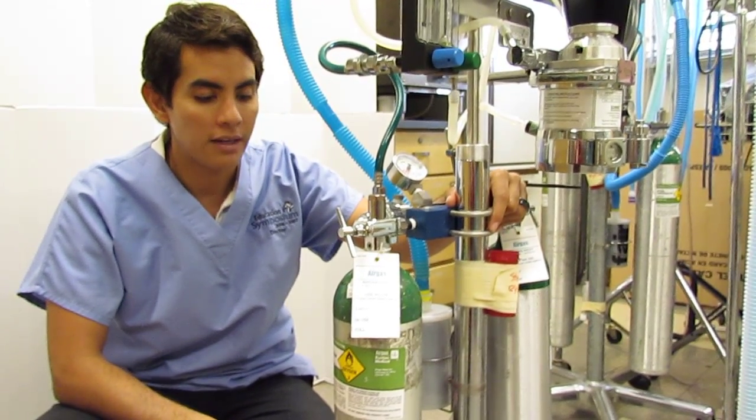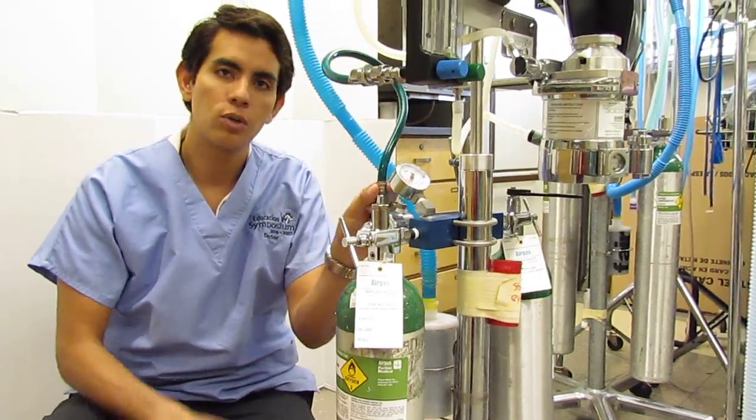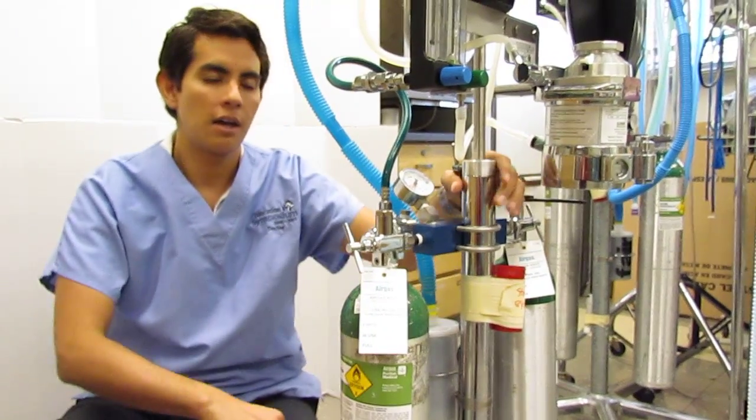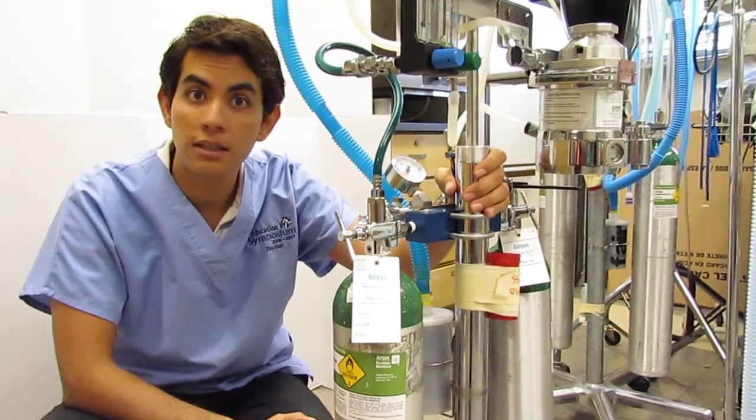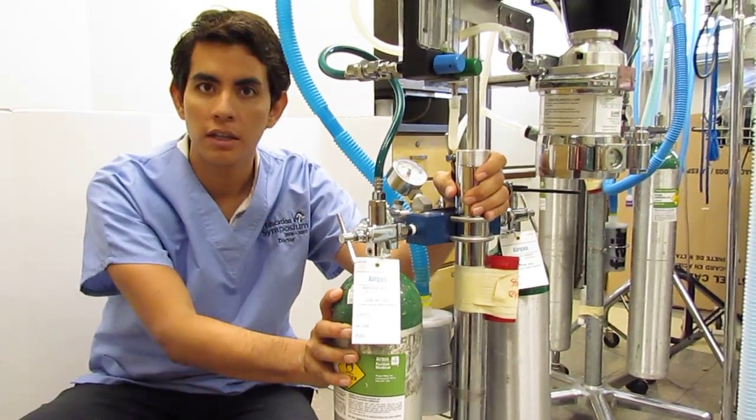If we had an H tank setup, this hose would connect directly into one of those connectors in the room coming down from the ceiling. We don't have that setup today, so we're going to be working off the E tanks.